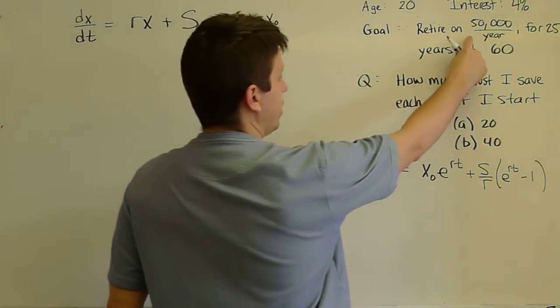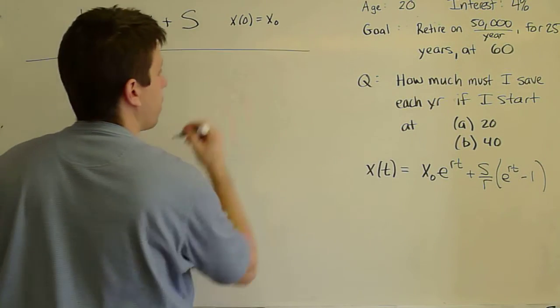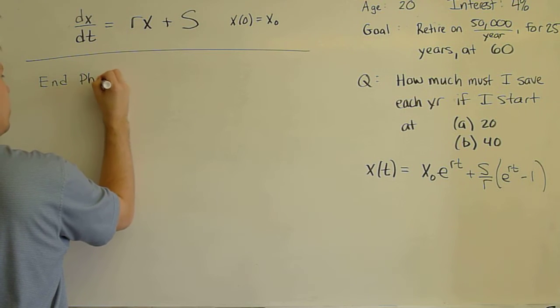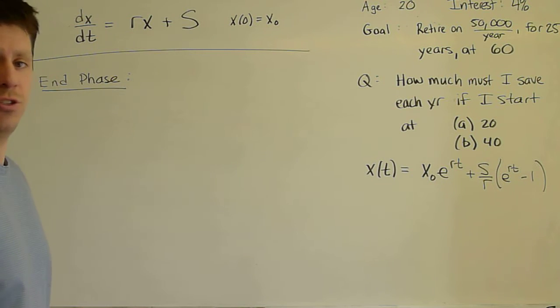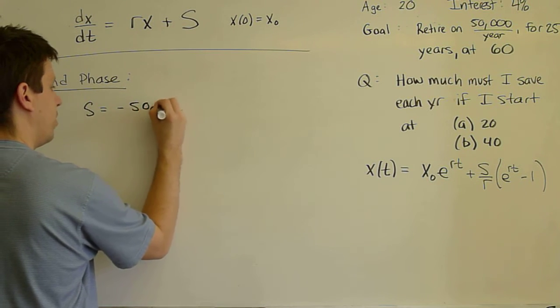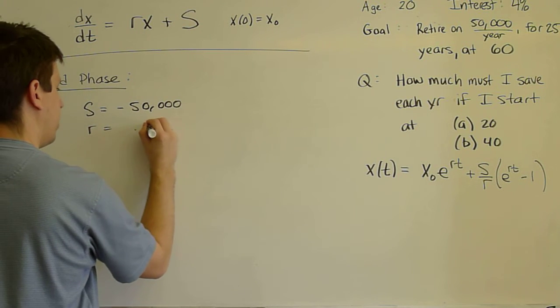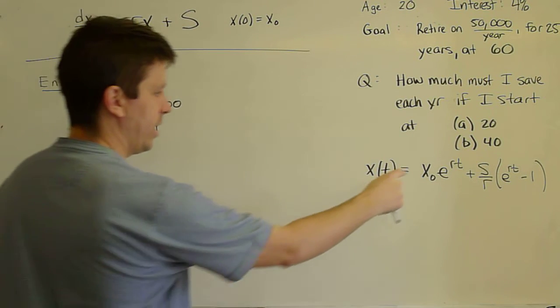If the goal is to spend $50,000 a year, then I'll put end phase. The goal is to spend $50,000 a year. So the goal is to have S = -50,000. R is given. It's 0.04.